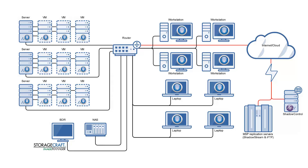The next slide highlights a typical customer layout. For client A, you might have a couple of physical servers each running a couple of virtual machines, some workstations, and some laptops. The main deployment configuration for StorageCraft involves some type of central storage — whether a network-attached storage device or a SAN — essentially a centralized storage location from which you can manage your backup images.